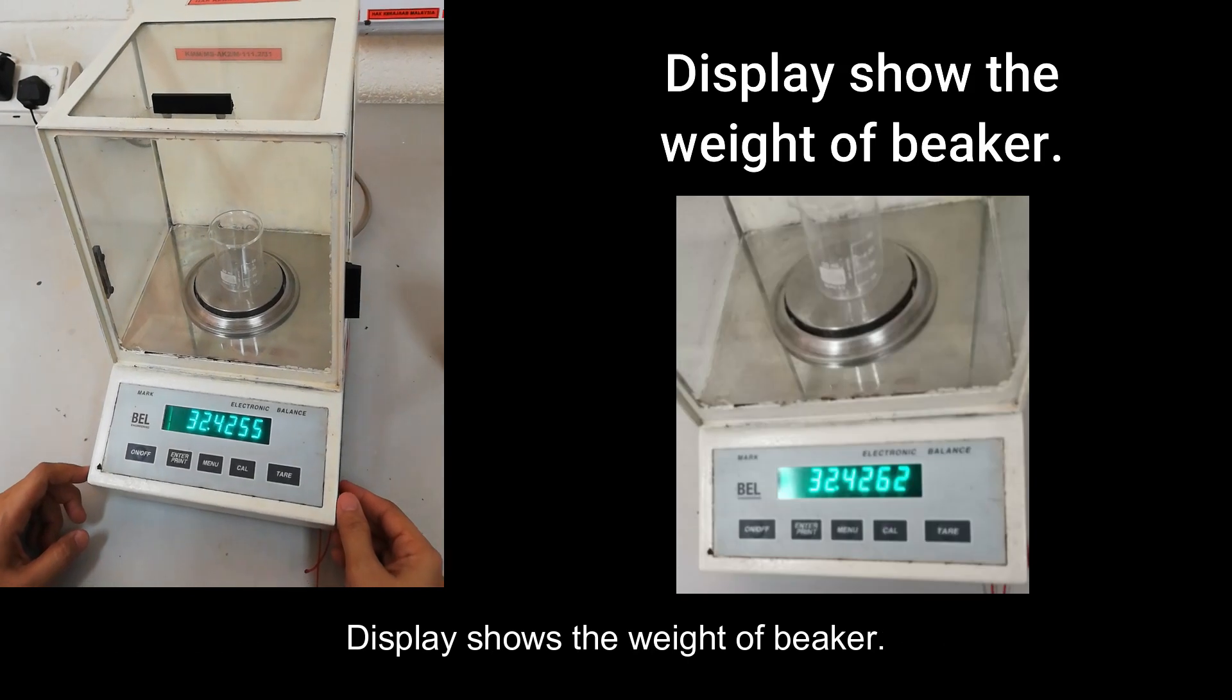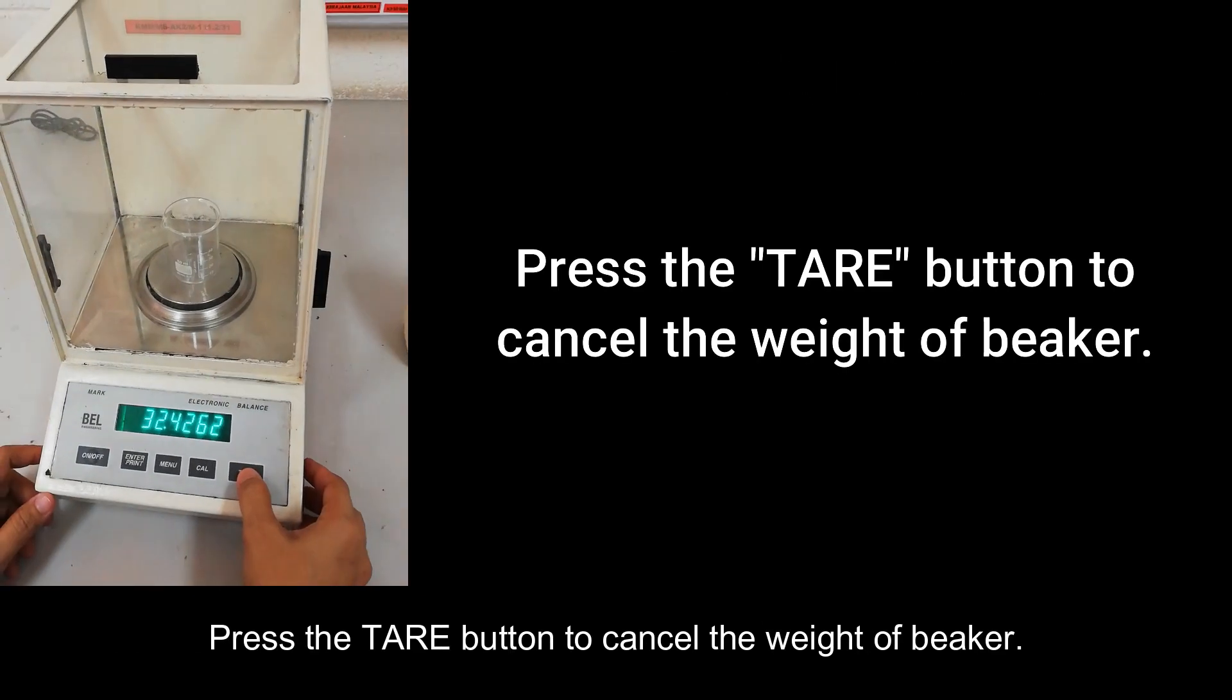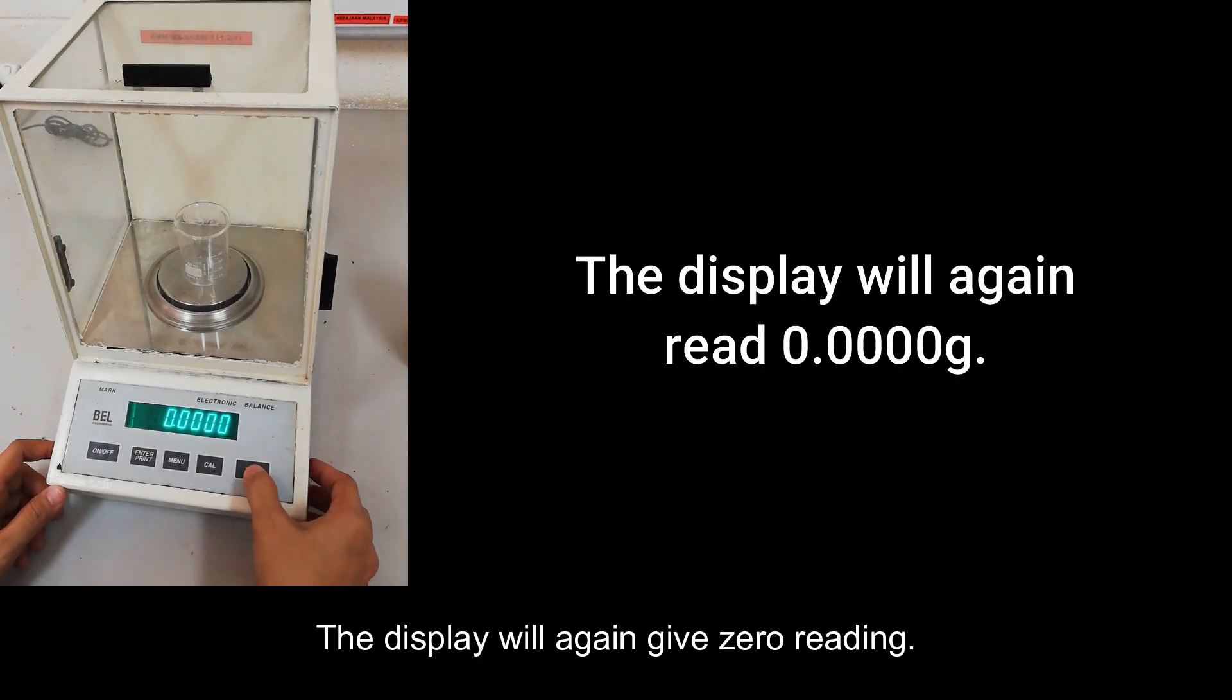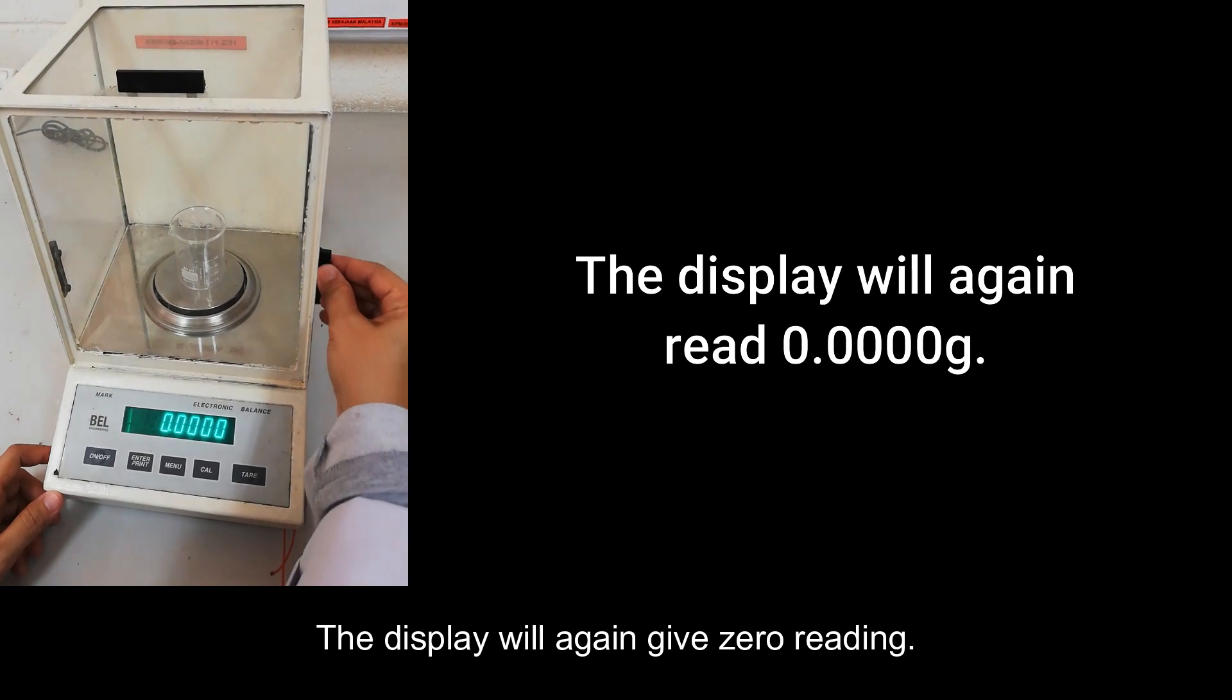Display shows the weight of beaker. Press the tare button to cancel the weight of beaker. The display will again give zero reading.